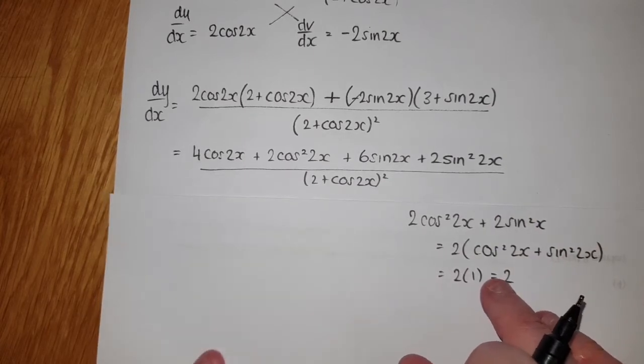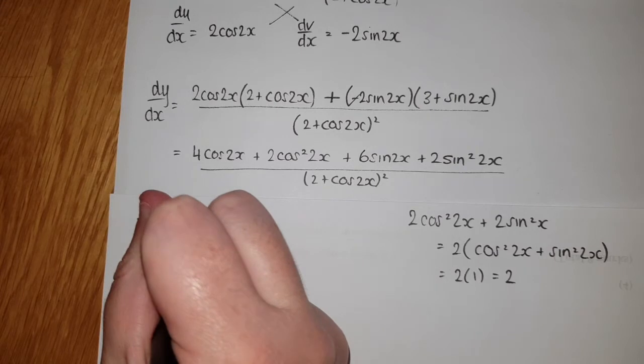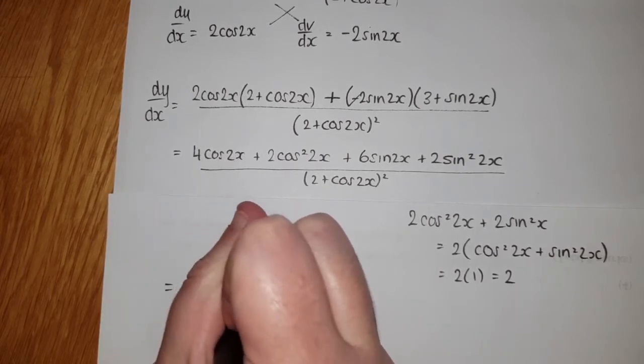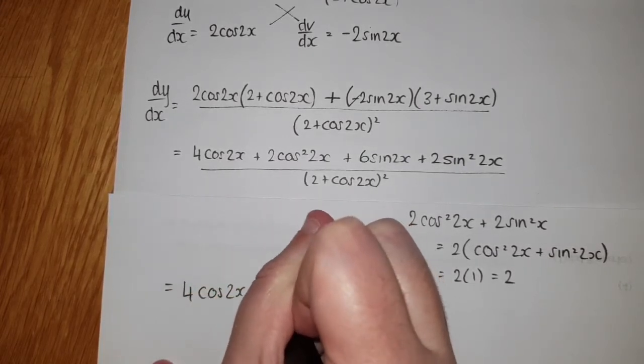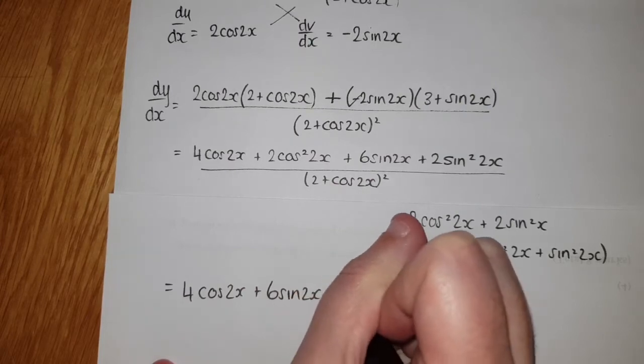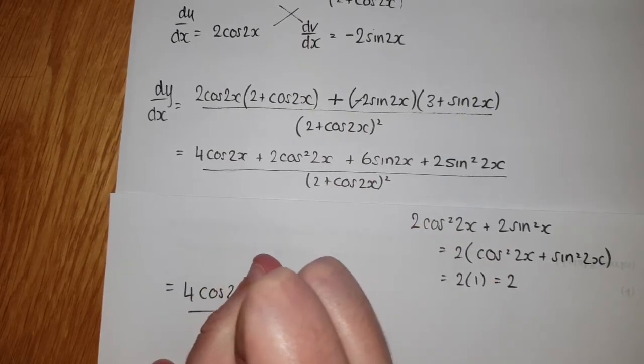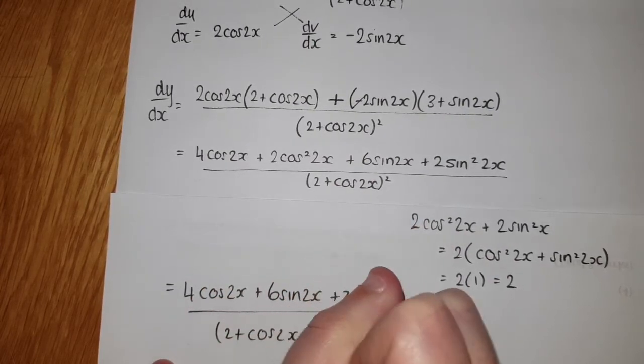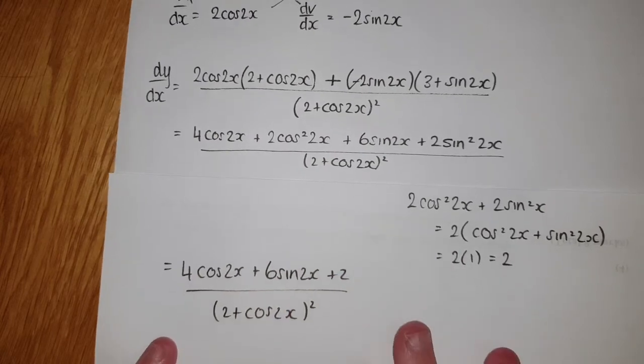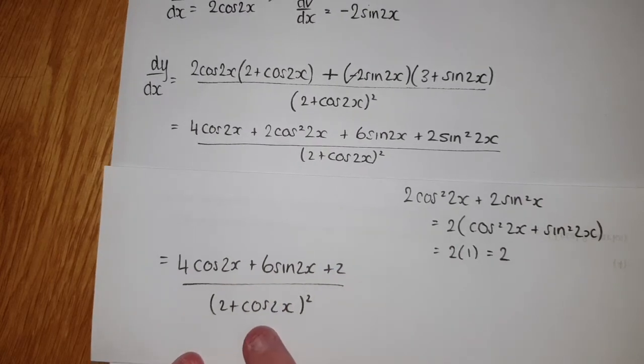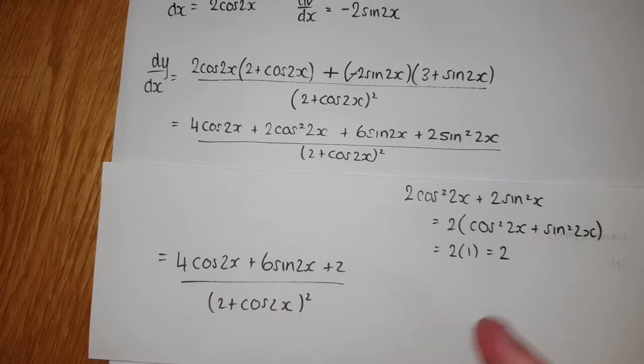In which case, that comes out as 2. So what you end up with is everything they asked for: 4cos(2x) + 6sin(2x) + 2, and the bottom stayed exactly as what was given. I've got just what they asked for in the question.